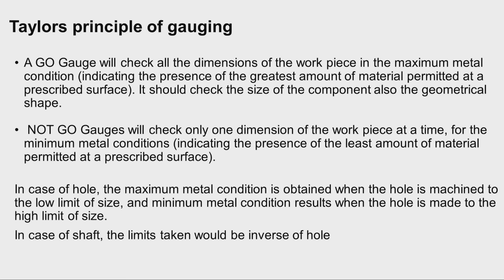We will start with Taylor's principle of gauging. Taylor has given some principles which are useful while designing gauges. The first principle is: a go gauge will have to check all the dimensions of the workpiece in the maximum metal condition, indicating the presence of the greatest amount of material permitted at a prescribed surface. It should check the size of the component as well as the geometrical shape.